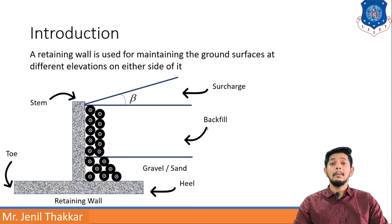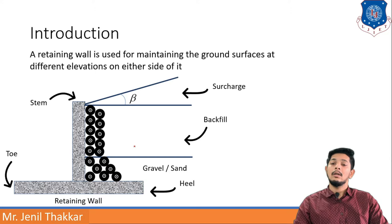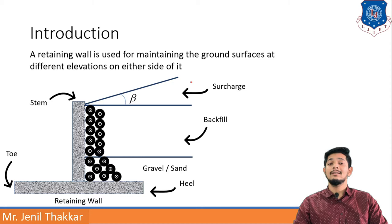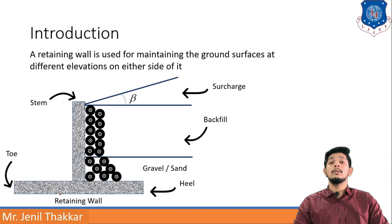Let us understand a retaining wall by its components. First, the material which is retained or supported by the retaining wall, shown in gray color, is known as backfill. If the backfill is inclined at some angle above the level of the retaining wall, it is known as surcharge, and the angle beta is known as the surcharge angle. The top portion of the retaining wall is known as the stem, the front portion is the toe, and the back bottom portion is the heel.